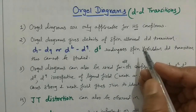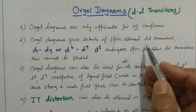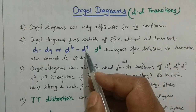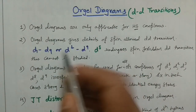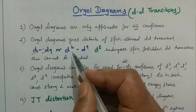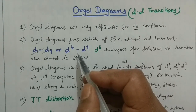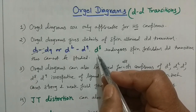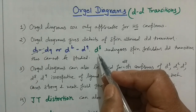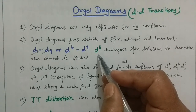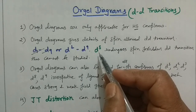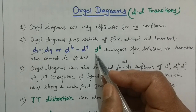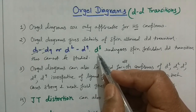Second point: Orgel diagrams give details of spin-allowed transitions only. Whenever you see dd transitions, they must be spin-allowed. Spin-allowed transitions from d1 to d9 are where Orgel diagrams are useful. For example, d5 systems have spin-forbidden transitions, not spin-allowed, so Orgel diagrams cannot be used well for d5 — that is a limitation, and that is why we use Tanabe-Sugano diagrams for d5 systems.